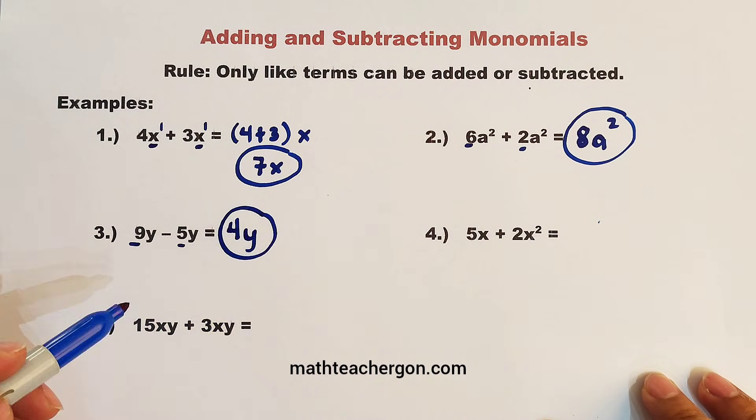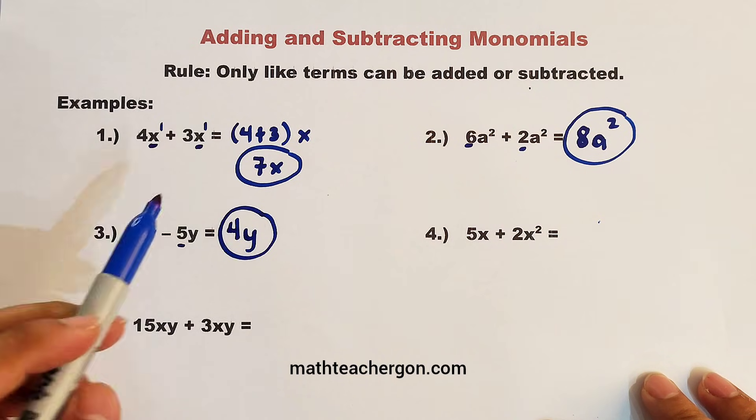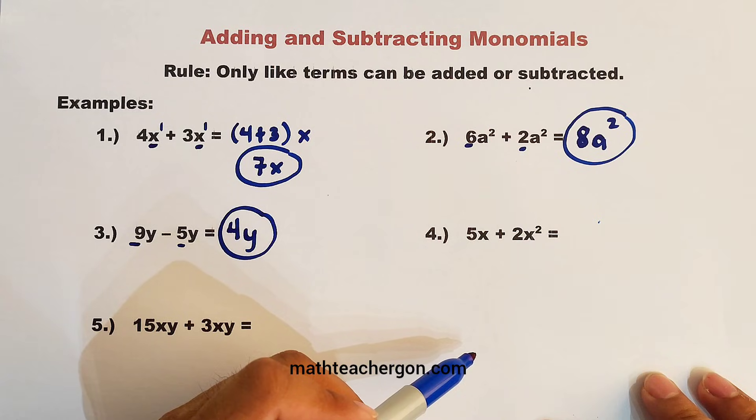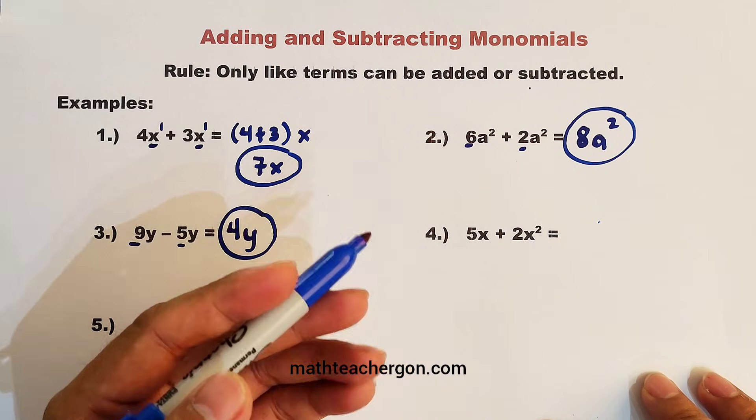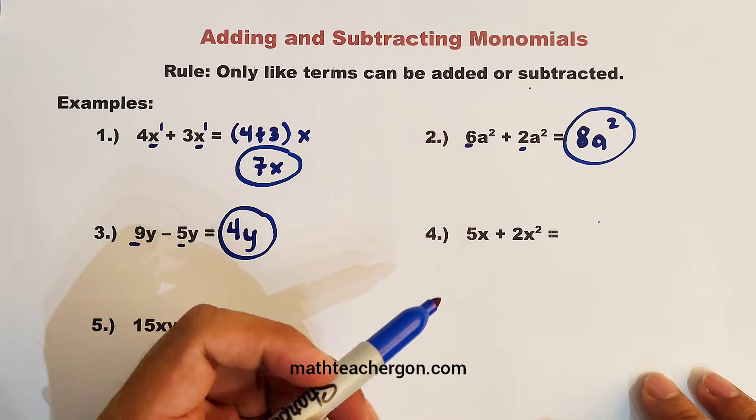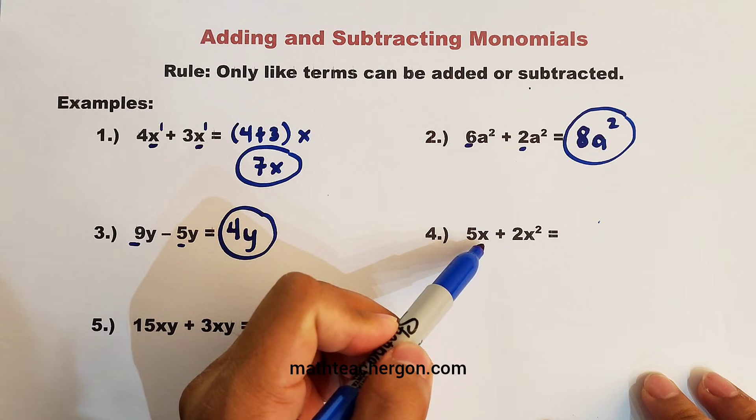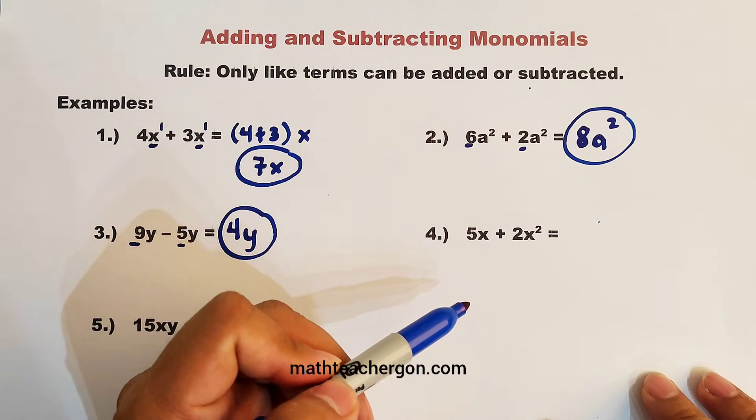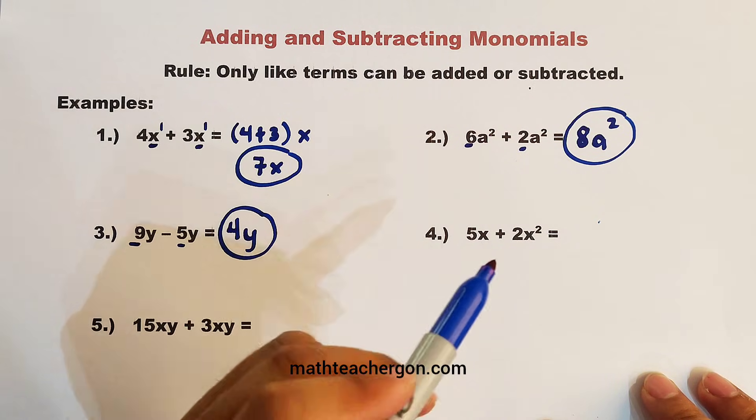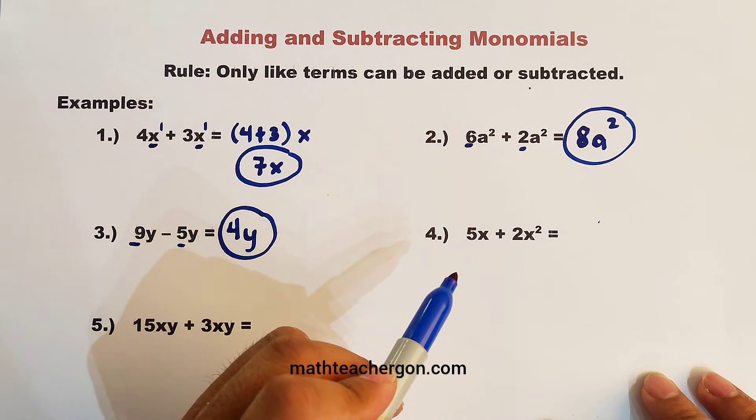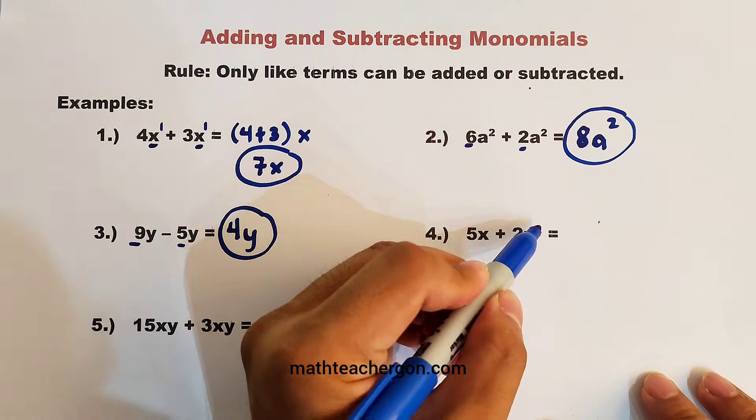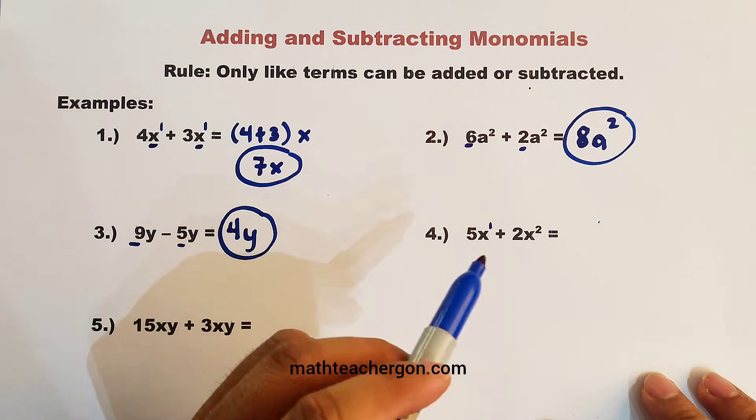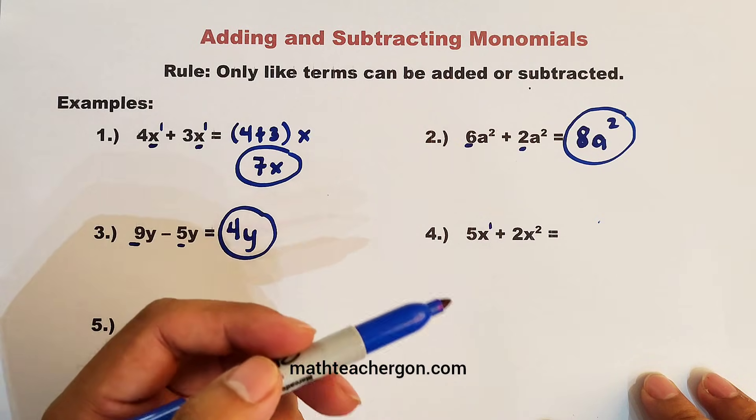Now let's move on with item number four. In number four, we have 5x plus 2x squared. Now, the question here, are they like terms? No. What is the reason? Though they have the same variable, which is x and x, the reason why they are unlike terms is that the variables contain different exponents. Here, the exponent is 2 and here, the exponent is 1.